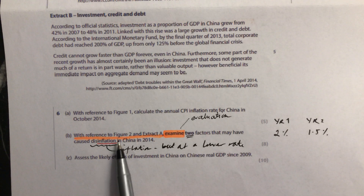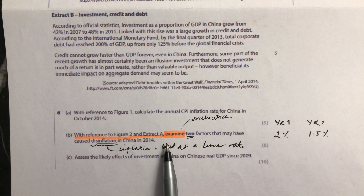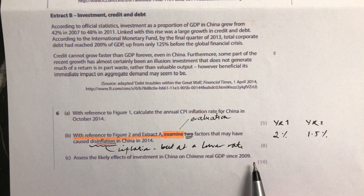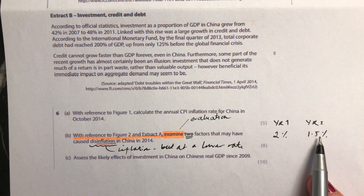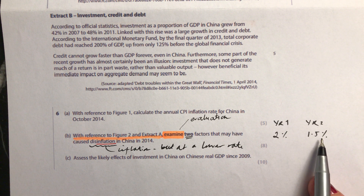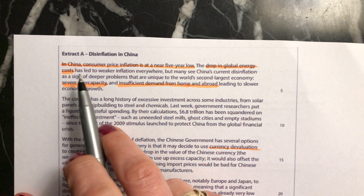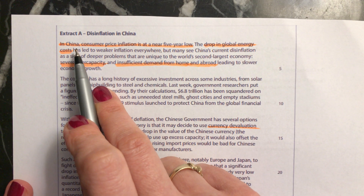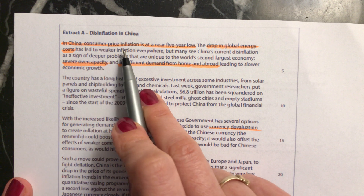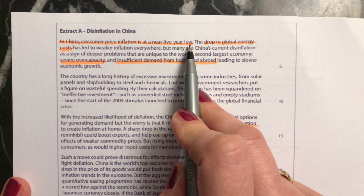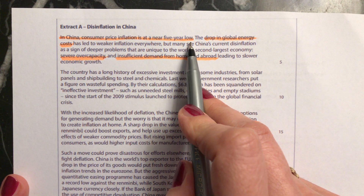Having looked at figure 2, you now need to look at extract A to find the factors which caused disinflation — why is there a decreasing rate of inflation, and why aren't prices going up as much as before? Extract A notes that in China, consumer price inflation is at a near five-year low, which relates directly to the disinflation shown in the figure.